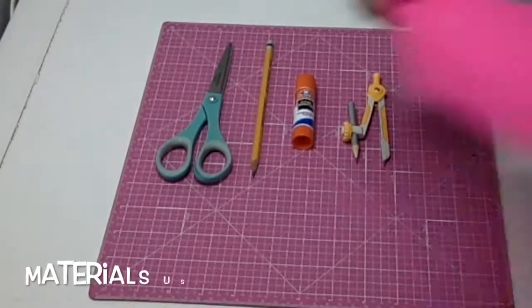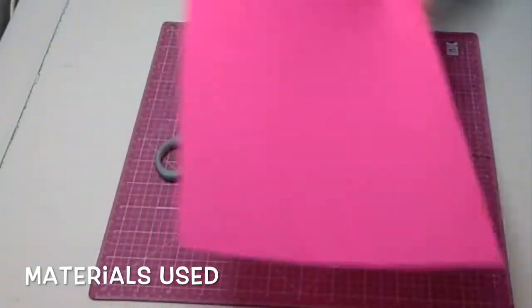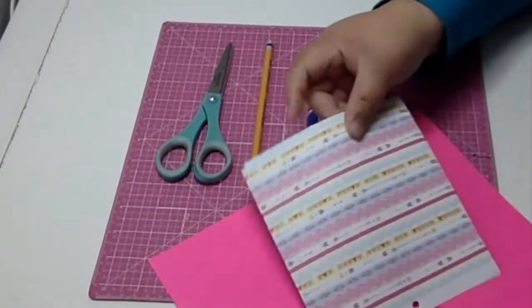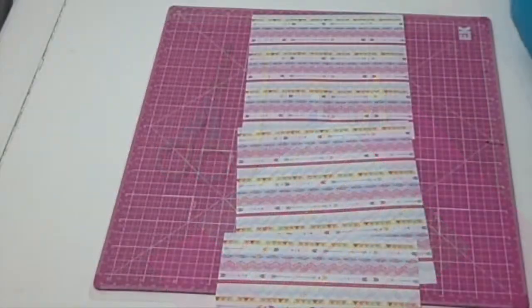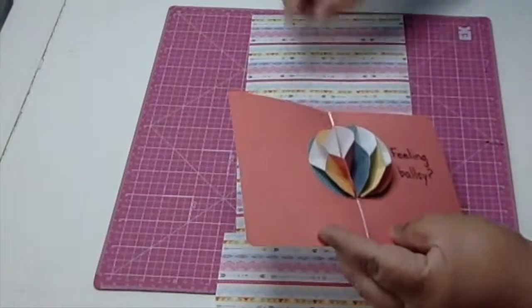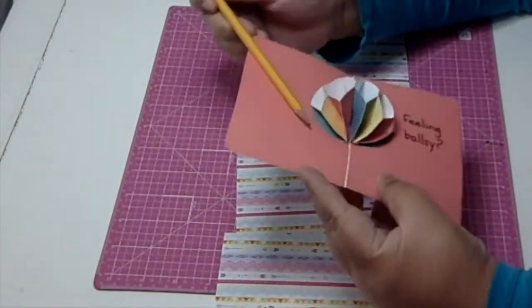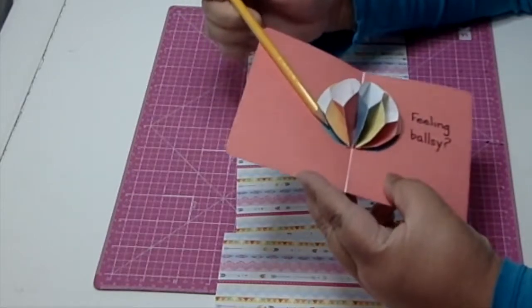Let's first talk about the materials. I use scissors, pencils, glue stick, a compass, and printer paper or any kind of lightweight paper, even like tissue paper would be good. Mostly because this kind of shape has a lot of layers and the card's gonna get really thick.